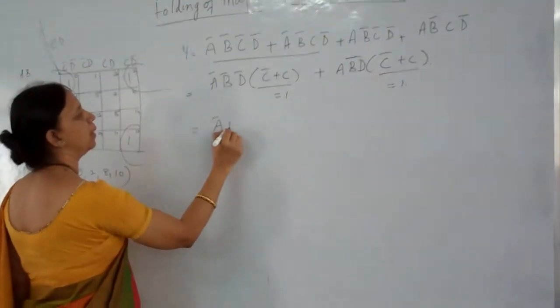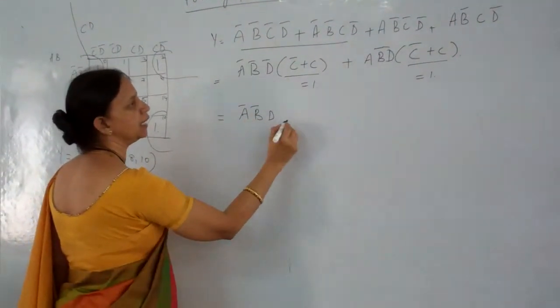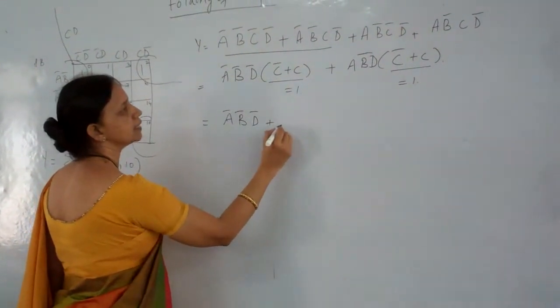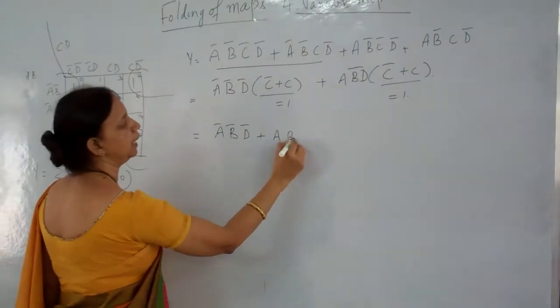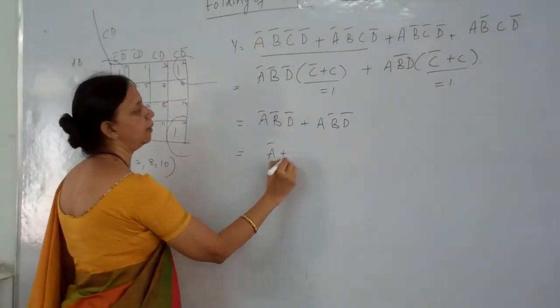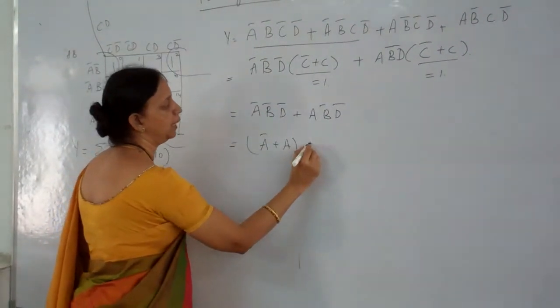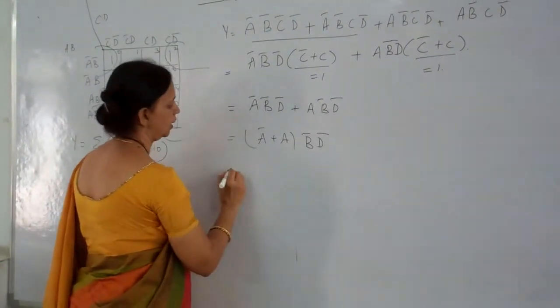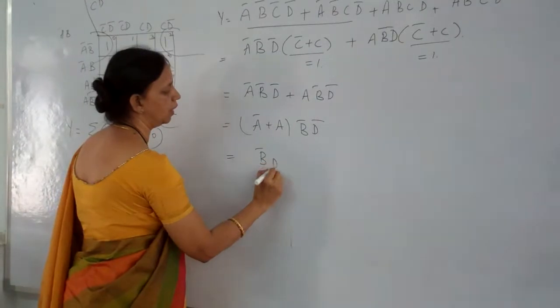What do you get? A bar, B bar, D bar plus A, B bar, D bar. Once again. A bar plus A, B bar, D bar, C bar, D bar.